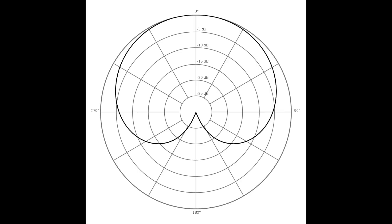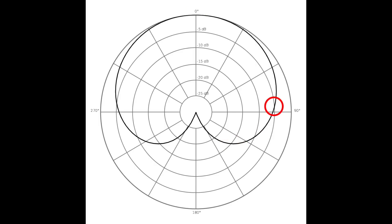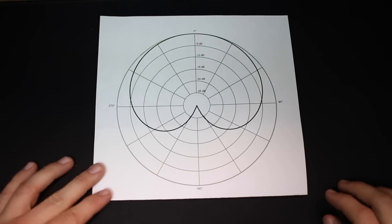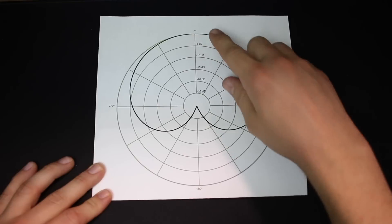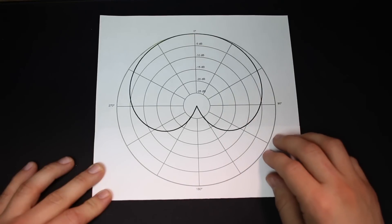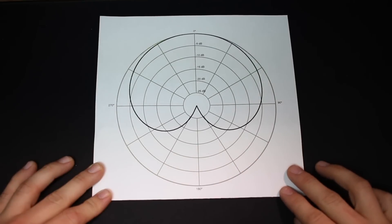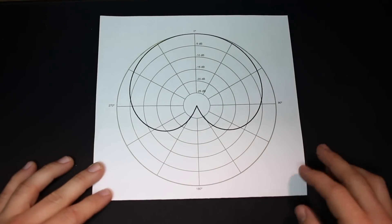As that darkened shape gets farther out from the center of the diagram, that indicates the signal being picked up will be louder. As it gets closer to the center, the signal will be quieter. For a cardioid polar pattern, at zero degrees — directly in front — you'll get the loudest signal, and at 180 degrees — directly behind — you'll typically get the quietest signal.